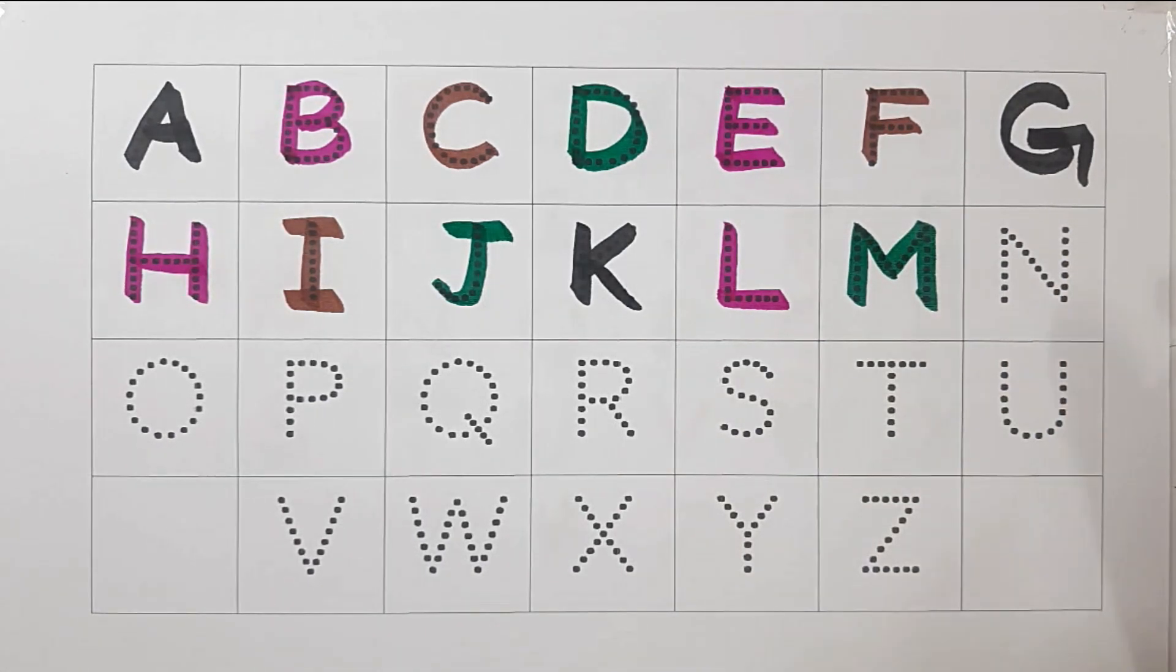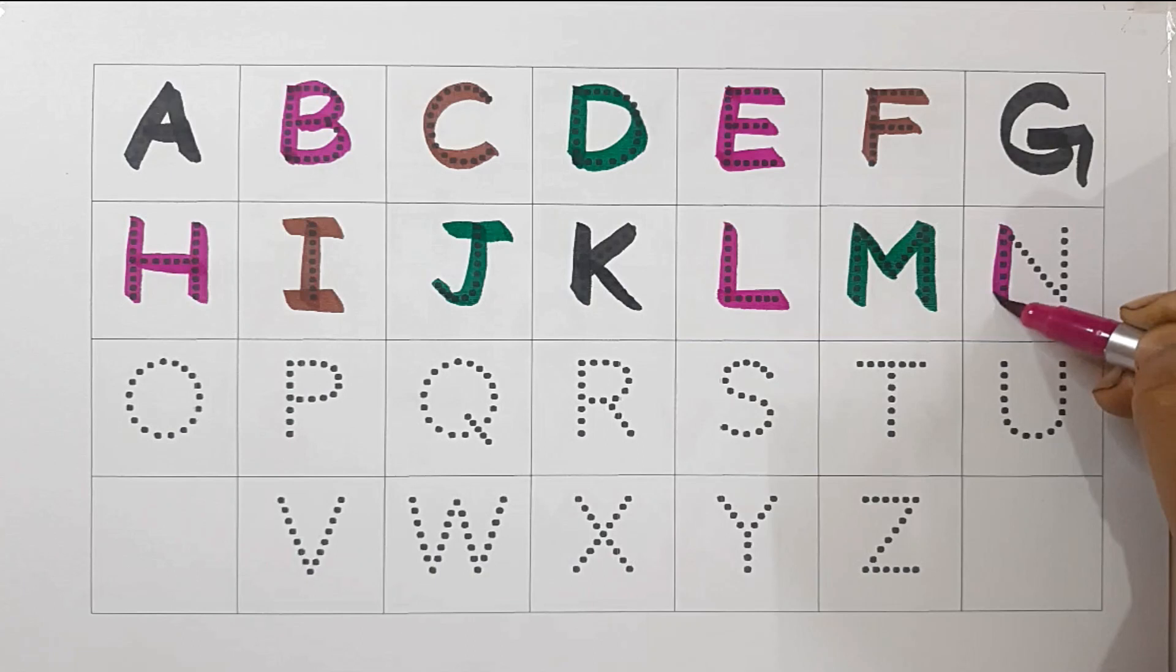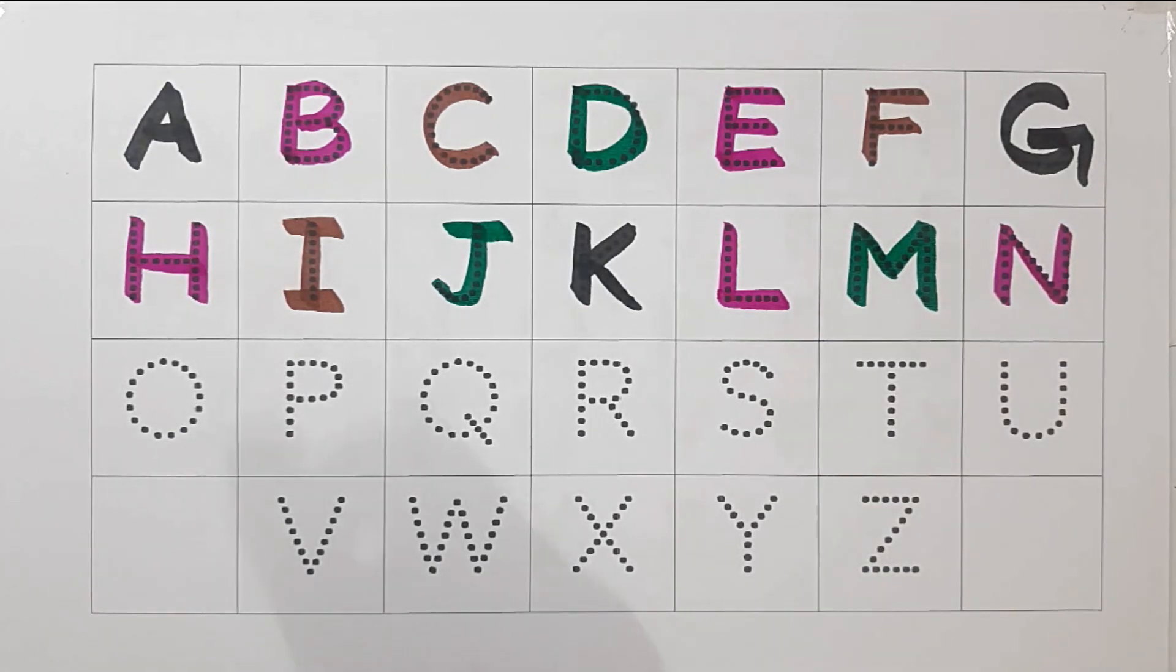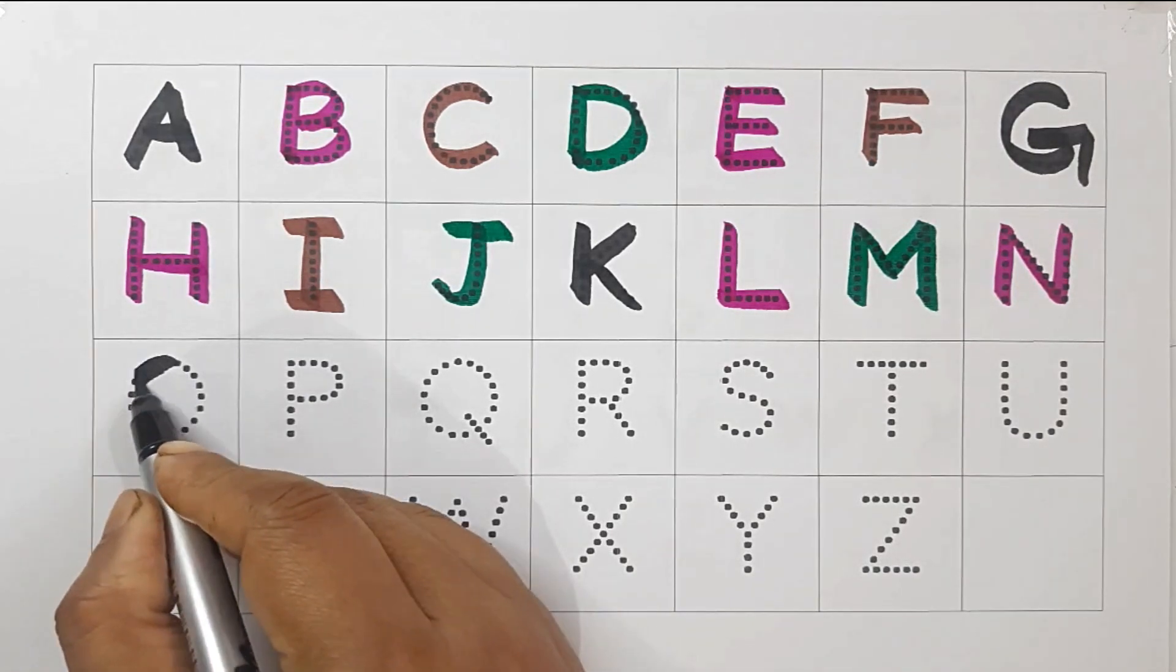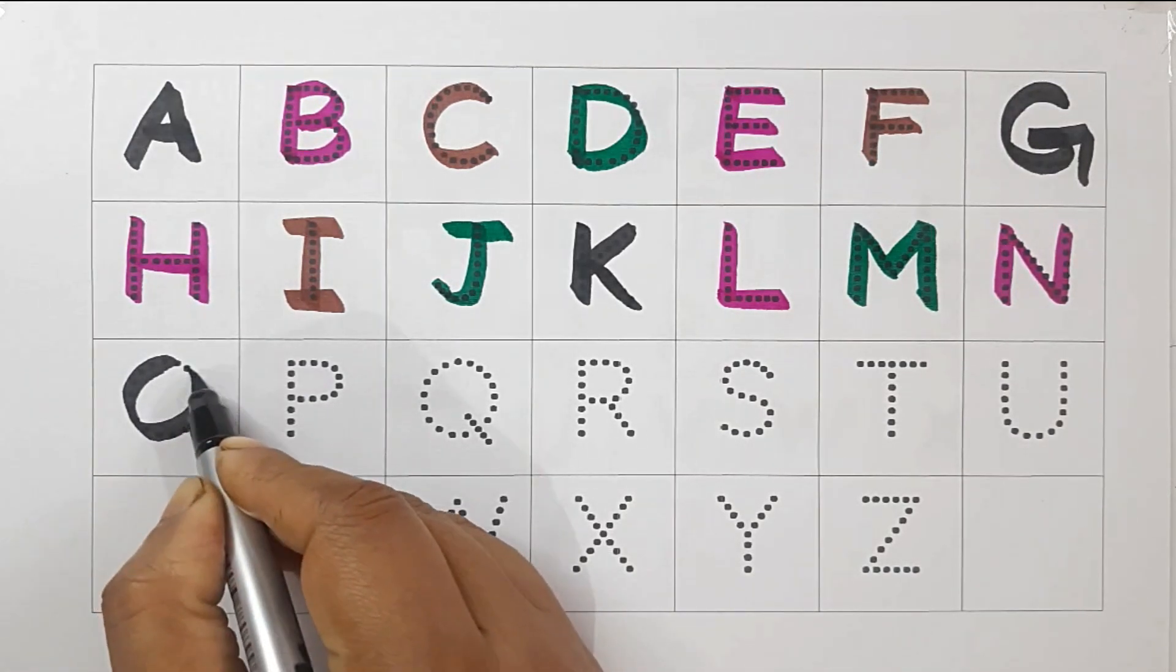Purple color, N, N for net. Black color, O, O for owl.